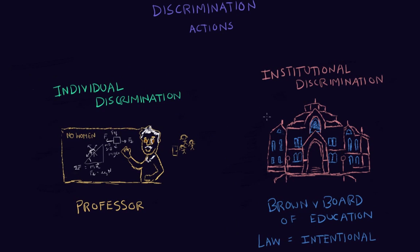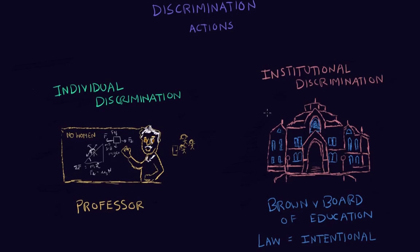In fact, that wasn't the case, and that's what Brown was saying. He was saying, hey, even though you're saying there are these separate but equal schools, it actually is not true. We're receiving much more inferior service, we aren't receiving the same education, and we're being mistreated. So that is what institutional discrimination is.